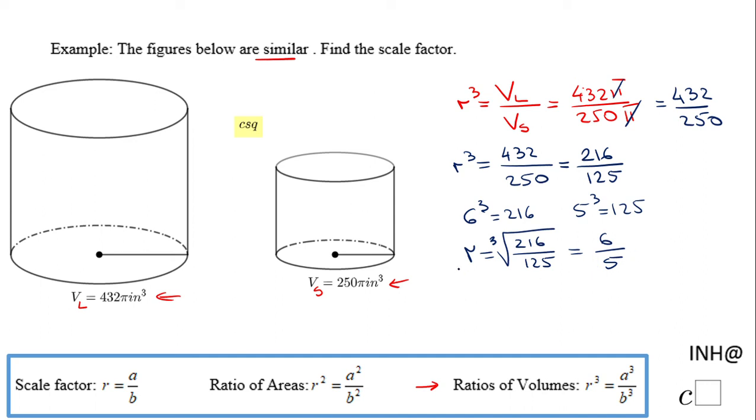So the r, the scale factor for these two similar shapes, is 6 over 5. In other words, if I know the radius of the small figure and I want to find the radius of the larger